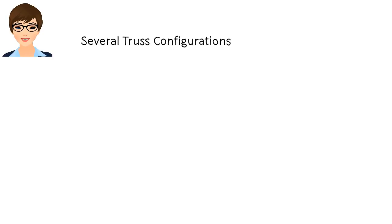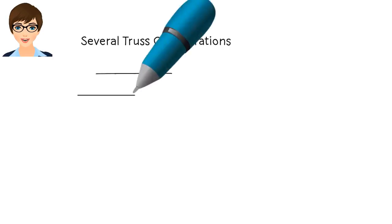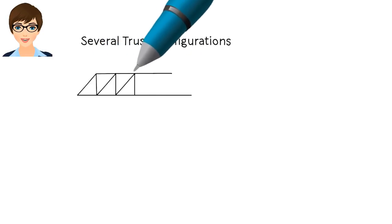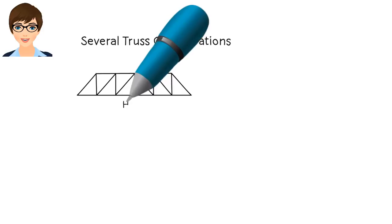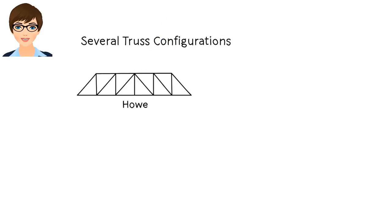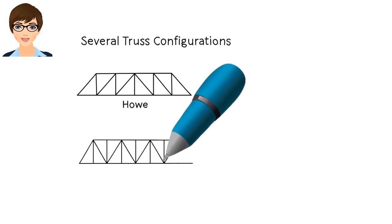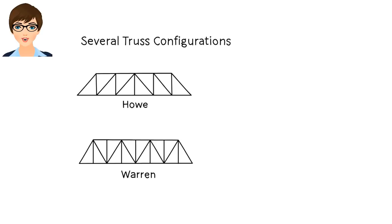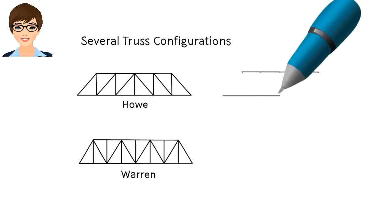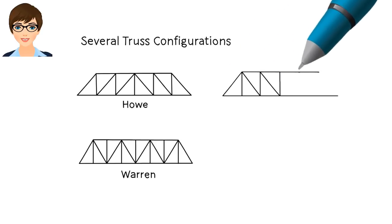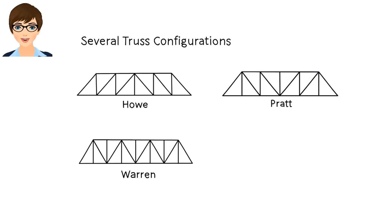Here are a few truss configurations usually seen in building roofs and bridges: Howe truss, Warren truss, Pratt truss, and K truss.